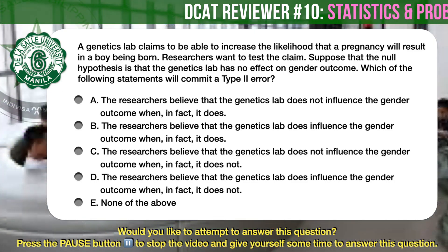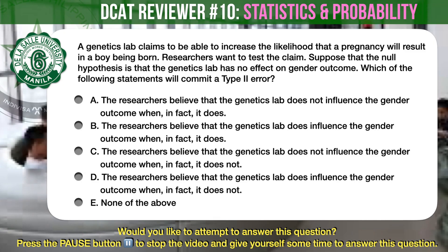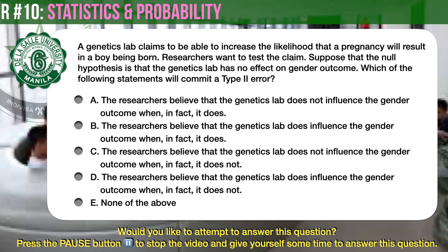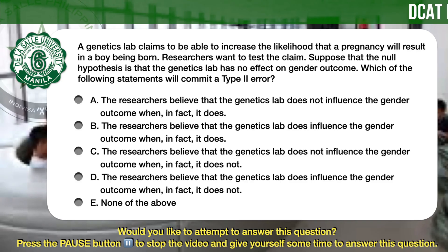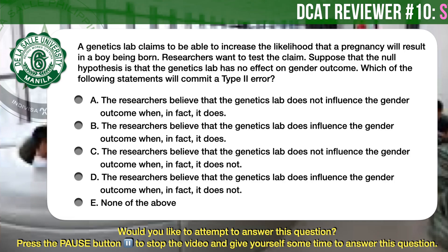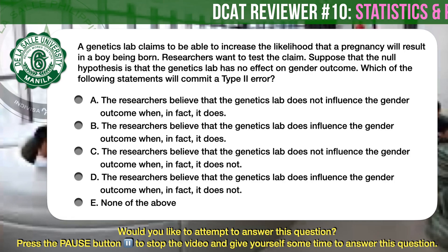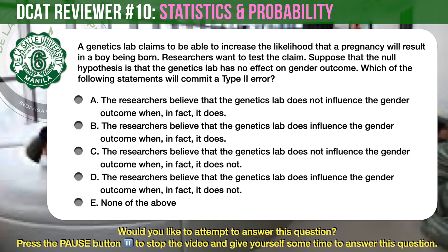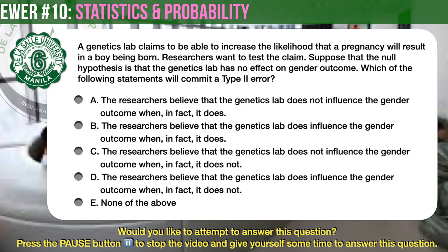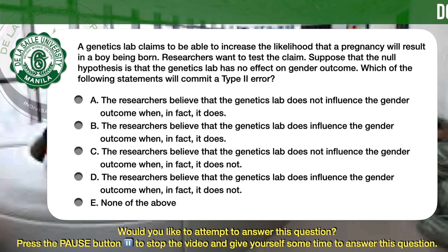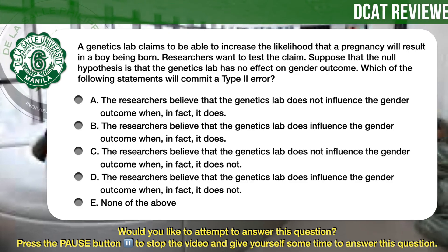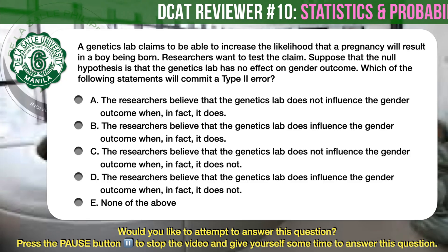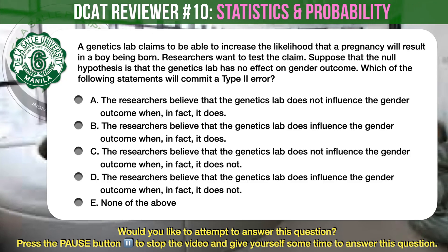Question number 6. A genetics lab claims to be able to increase the likelihood that a pregnancy will result in a boy being born. Researchers want to test the claim. The null hypothesis is that the genetics lab has no effect on gender outcome. Which statement commits a type 2 error? A: The researchers believe the lab does not influence gender outcome when, in fact, it does. B: They believe it does influence gender outcome when, in fact, it does. C: They believe it does not influence gender outcome when, in fact, it does not. D: They believe it does influence gender outcome when, in fact, it does not. E: None of the above.